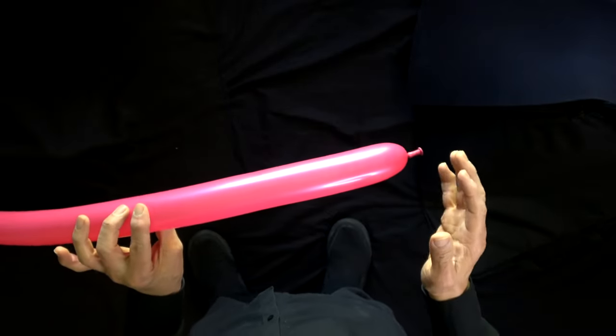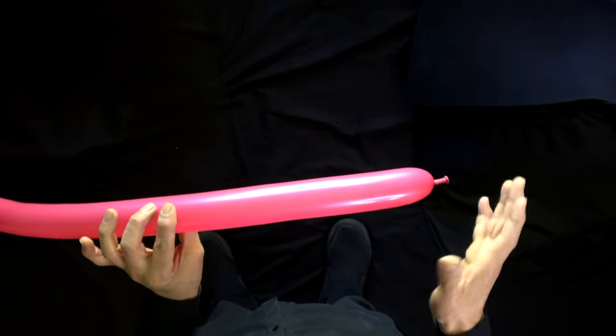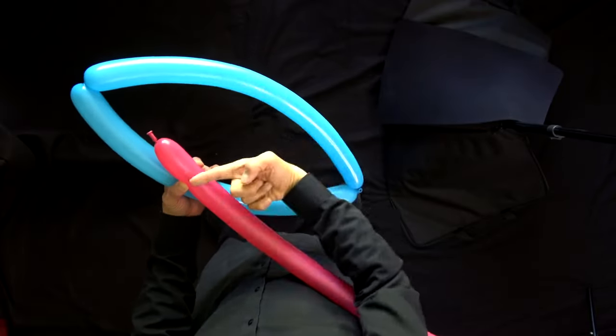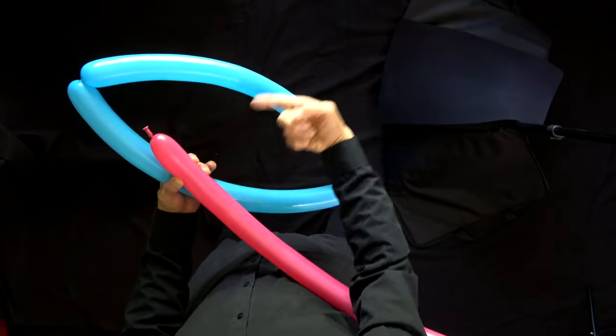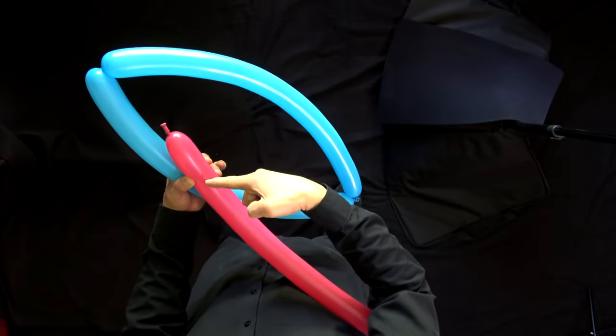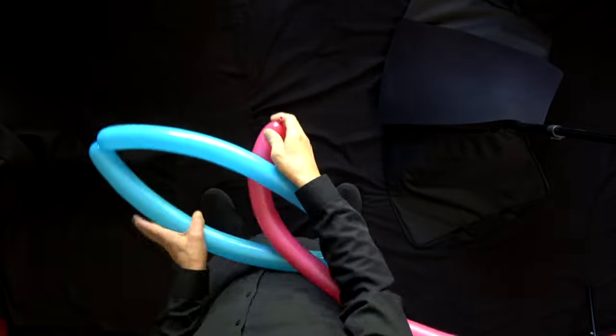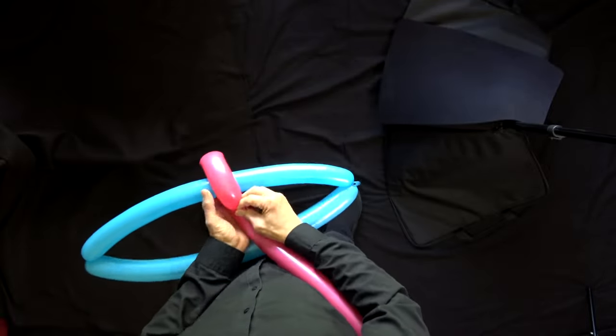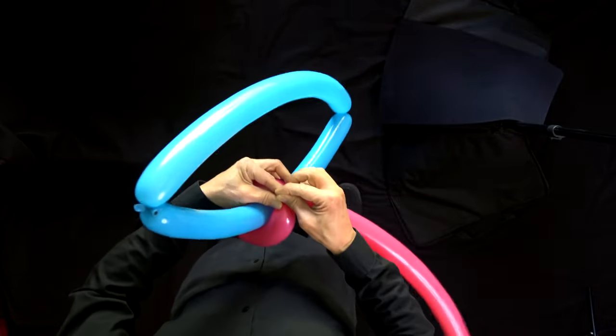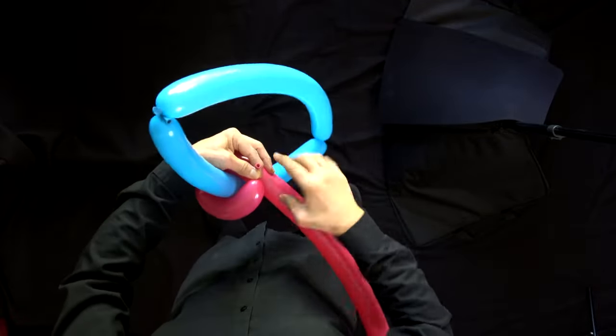What I'm going to do is attach this to our bow and arrow with a series of fold twists. Take the nozzle and you're going to make a fold twist around the bow here and reattach the nozzle into here with the fold twist. Hold the nozzle and then make a twist.